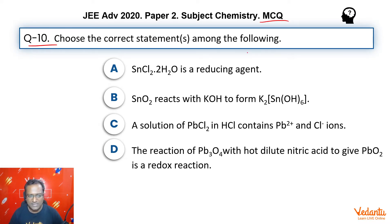The question says, option A, SnCl2.2H2O is a reducing agent. So we know that due to inert pair effect, Sn+2 readily converts to Sn+4 and therefore it loses electrons. That means it does act as a strong reducing agent. Absolutely true.